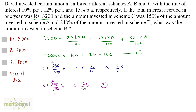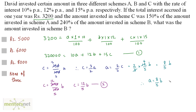Now putting the value of C into the equation A equals 2/3 C, we get A equals 2/3 times 12/5 B. So 3 times 4 is 12, which simplifies to 8/5 B. Therefore A equals 8/5 B. This is equation 3.